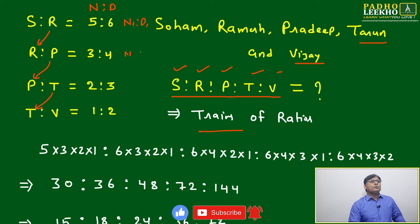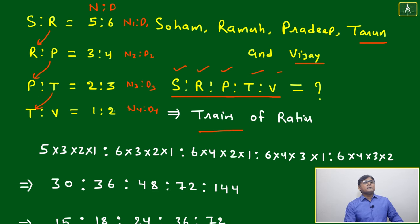Now to get the first ratio, you just multiply all the numerators: 5×3×2×1. Next, you take the first denominator and you just jump to this side. Very simple.